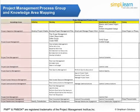This table covers all the processes, knowledge areas, and process groups, known as the Project Management Process Group and Knowledge Area Mapping. With these changes, one may have a doubt about when the changes based on the 5th edition will be effective in the exam. We will clarify this in the next slide along with a summary of all the changes.